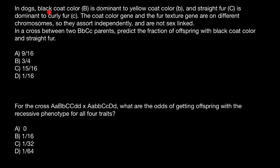The first problem: in dogs, black coat color (capital B) is dominant to yellow coat color (small b), and straight fur (capital C) is dominant to curly fur (small c). The coat color gene and the fur texture gene are on different chromosomes, so they assort independently and are not sex linked. In a cross between parents who are both heterozygous for both genes, predict the fraction of offspring with black coat color and straight fur.